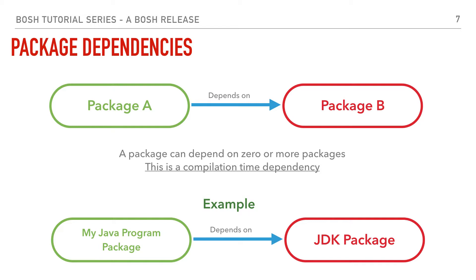Let's talk about BOSH package dependencies. A package can depend on zero, one, or more packages when we create it, and this represents compilation-time dependencies. Package B will only be available for package A during compilation. For example, if we have a Java program — a package containing our classes and another package containing the JDK — we can state that our Java program package depends on the JDK package, and it will only be available during compilation time.